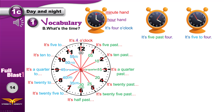If the minute hand is at 2, we say it's 10 past 4. If it's at 3, we don't say 15 — we say quarter. A quarter. It's a quarter past 4. It's 20 past 4. It's 25 past 4. If it's at 6, we say half — it's half past 4. If it's at 7, we say 25 — it's 25 to 4. It's 20 to 4. It's a quarter to 4. It's 10 to 4. It's 5 to 4.